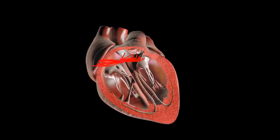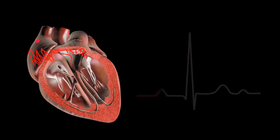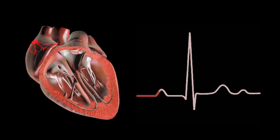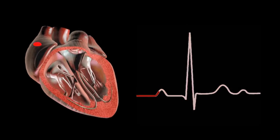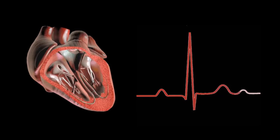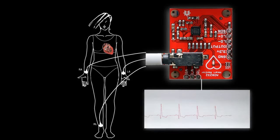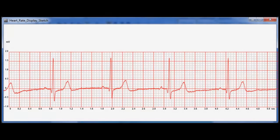Alex here from howtoelectronics.com. In today's video we'll learn about the electrical activity happening in our heart — that is, how the heart contracts and relaxes and generates a signal known as an ECG signal or electrocardiogram. Based on the electrocardiogram you can understand how the heart is functioning and what other diseases you may be facing. We use the module AD8232 to measure the heart activity.